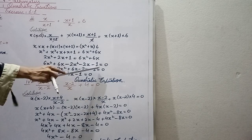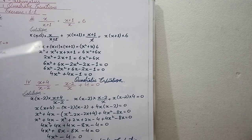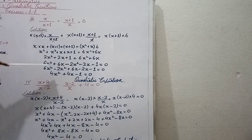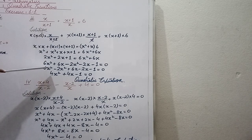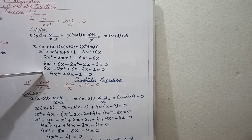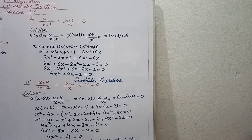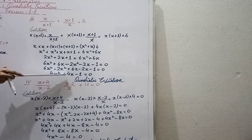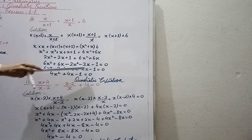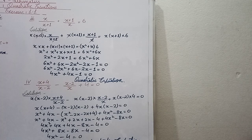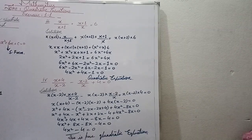Rearranging: 6x squared plus 6x minus 2x squared minus 2x minus 1 equals 0. Collecting like terms: 4x squared plus 4x minus 1 equals 0. Since the x term is present, this is a simple quadratic equation.